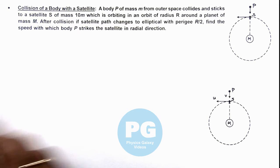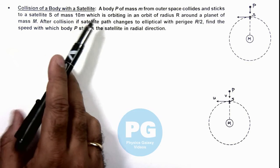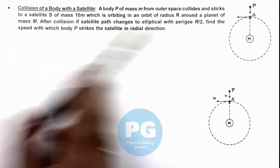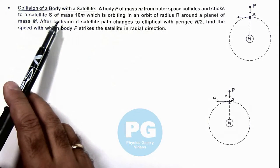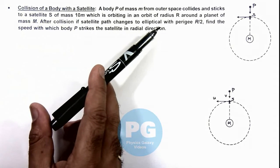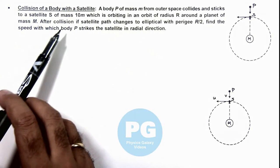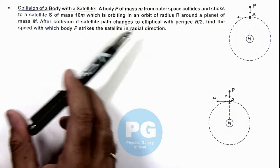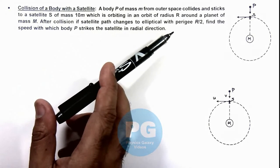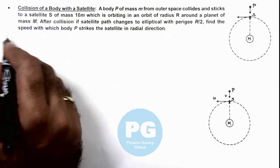In this illustration we'll analyze the collision of a body with a satellite. Here we are given that a body P of mass m from outer space collides and sticks to a satellite S of mass 10m, which is orbiting in an orbit of radius R around a planet of mass M. After collision, if the satellite path changes to elliptical with perigee R by 2, the closest distance from planet, we are required to find the speed with which body P strikes the satellite in radial direction.